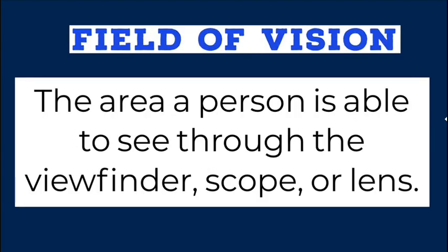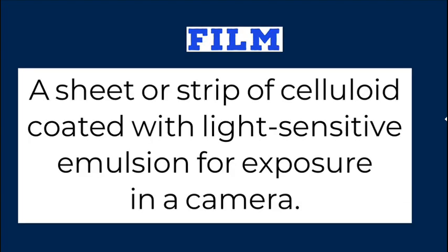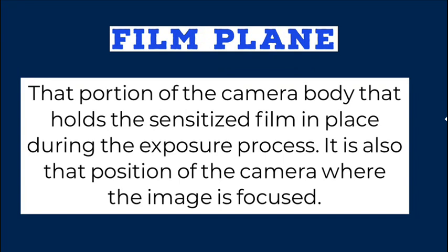Field of vision: the area a person is able to see through the viewfinder, scope, or lens. Fill in: secondary illumination to keep shadow areas from photographing too dark, also known as the fill light. Film: a sheet or strip of celluloid coated with light-sensitive emulsion for exposure in a camera. Film plane: that portion of the camera body that holds the sensitized film in place during the exposure process; it is also the position of the camera where the image is focused.